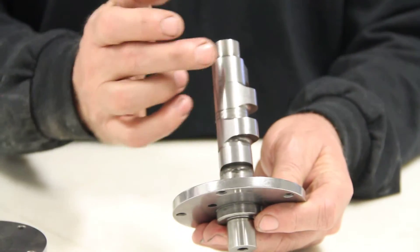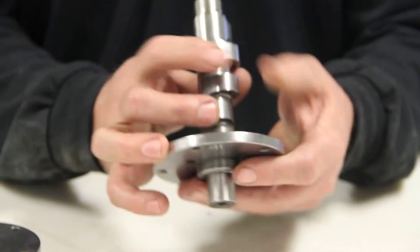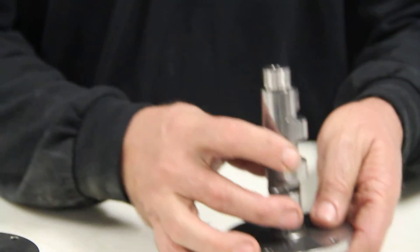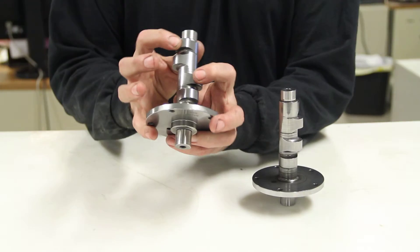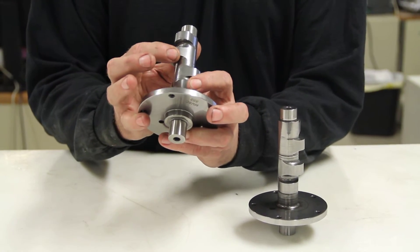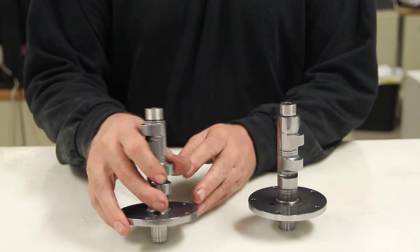On this cam here, this lobe and this lobe are the intake lobes. These two are the exhaust lobes. And the opposite is true here. This lobe and this lobe are the intake lobes, and these two are the exhaust lobes. So it's just flipped around the other way.